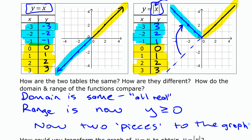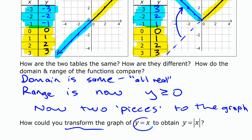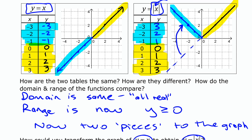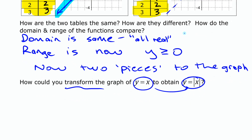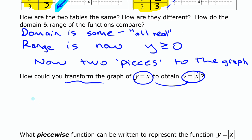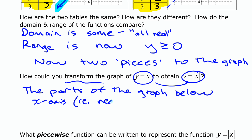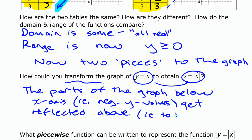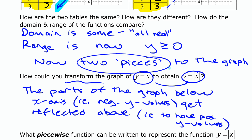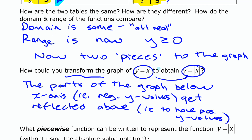Thinking of this as a transformation: to transform the original graph y equals x into y equals absolute value of x, the part that gets transformed is the part with negative y values. All the parts of the graph that have negative y values have been reflected up above, so any y values that were negative become positive. Because it has two pieces, we can express this algebraically with what's called a piecewise function.